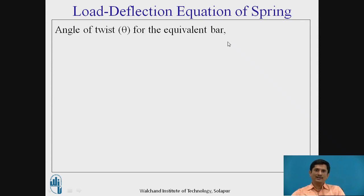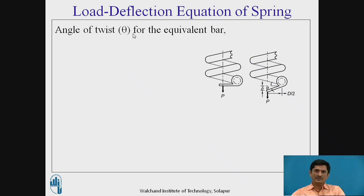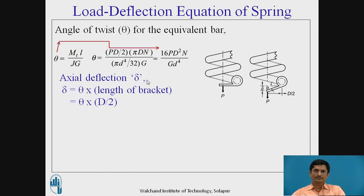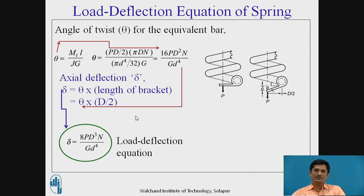Next equation is load deflection equation of the spring. Angle of twist theta at the end is the effect caused by the force P, but our interest is delta. We know this angle theta by the torsion equation. We can rewrite tau is PD by 2, L is pi DN, then J and G. The equation is simplified. Axial deflection which is equal to theta into D by 2, we can replace the value of theta and then delta changes to delta equals 8P D cubed N upon G d raised to 4. This is the load deflection equation.